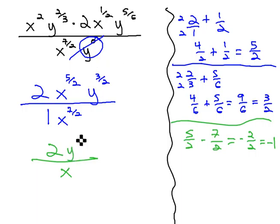The y to the 3 halves has nothing to combine with it, and so it will stay in the numerator, giving us 2y to the 3 halves over x for our final simplified answer. We know this answer is completely simplified because there's a single x and a single y, no variable appears twice, there's no negative exponents, and there's no parentheses.